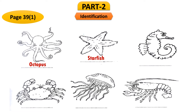On the right, the animal looks like a horse — its head resembles a horse — but it lives under the sea, so it is known as seahorse. On the lower left, a very familiar animal in our country, often seen at Cox's Bazar sea beach, is the crab.